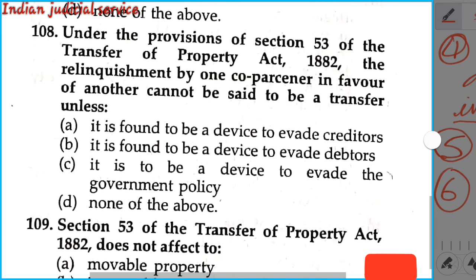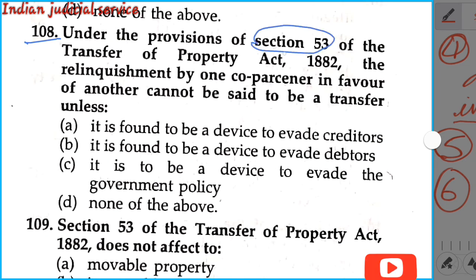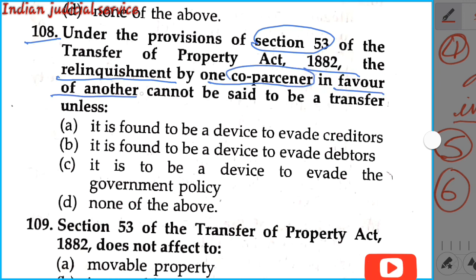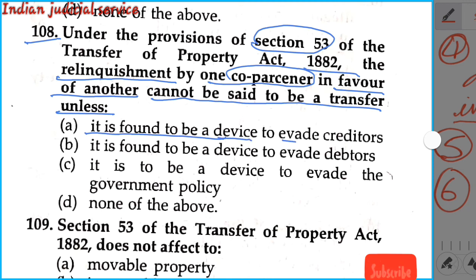Question number 108: Under the provisions of section 53 of the Transfer of Property Act 1882, the relinquishment by one co-partner in favour of another cannot be said to be a transfer unless it is found to be devised to evade creditors. Our answer is option A.